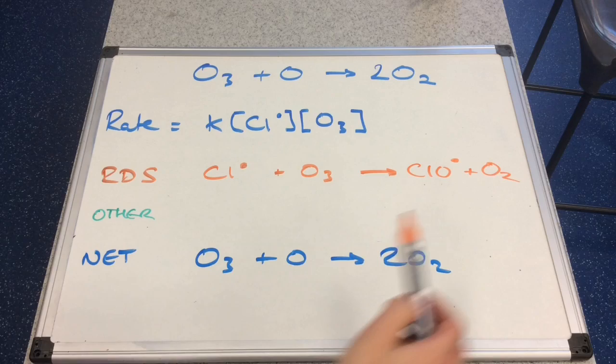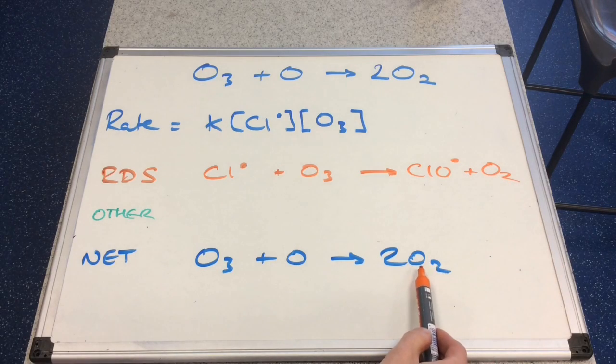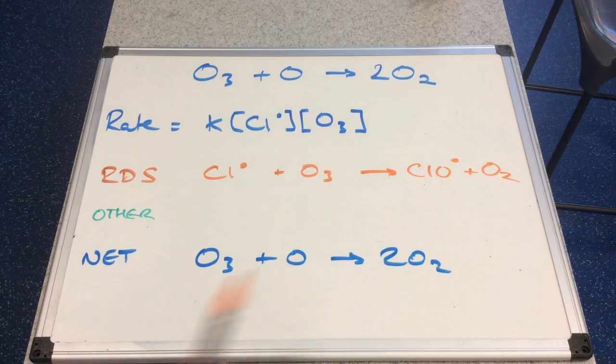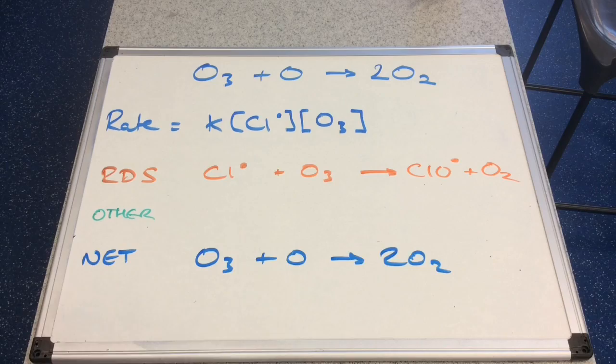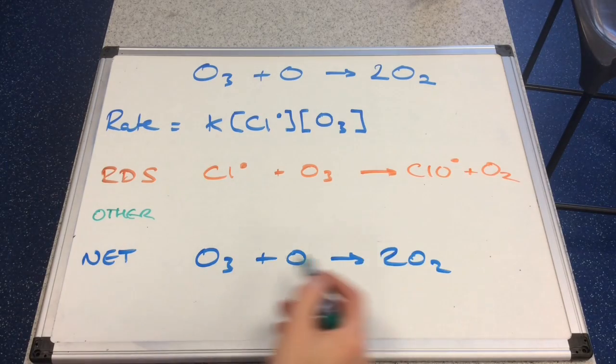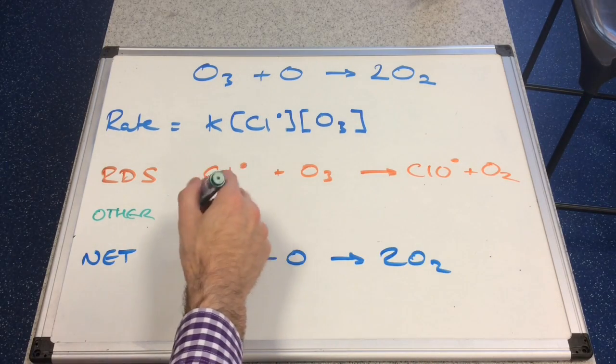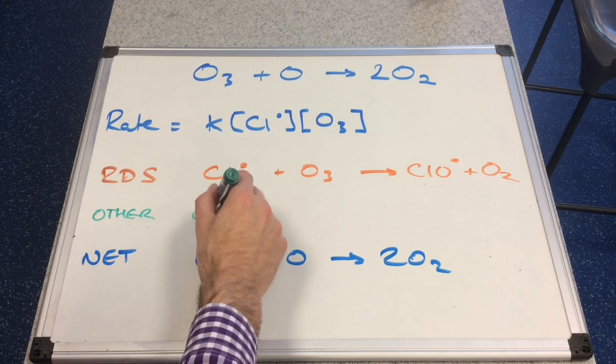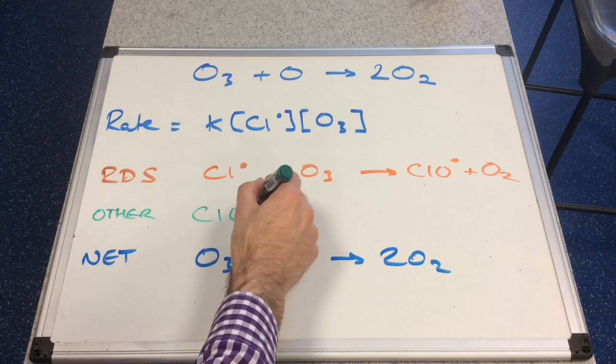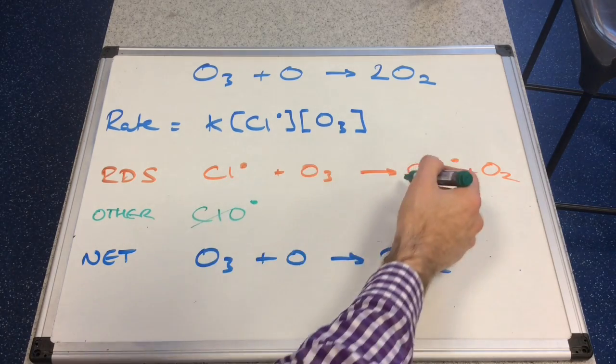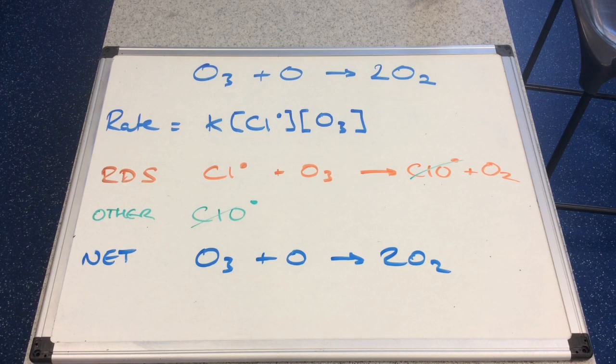You can see we've made one of the O2s that we need. Remember, we need two. So we haven't got this ClO radical in the overall equation, so we need to get rid of that. So we're going to bring it into this step here, ClO radical. So they will cancel. May as well cancel them now, just to see that that's going to happen.